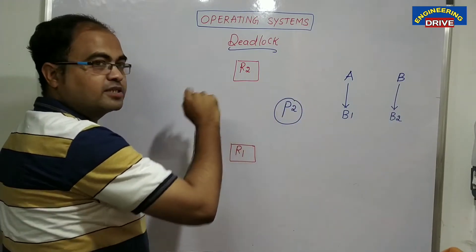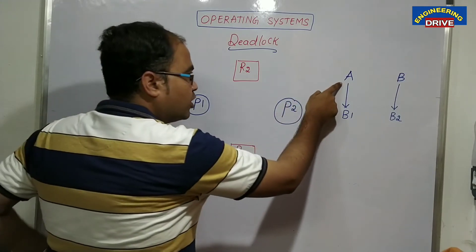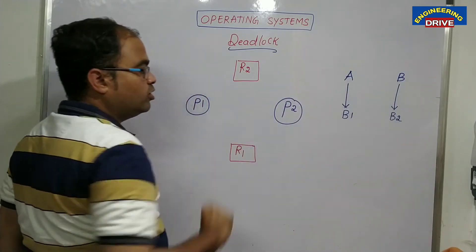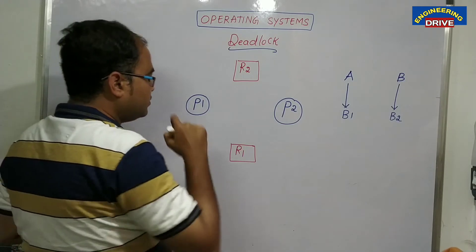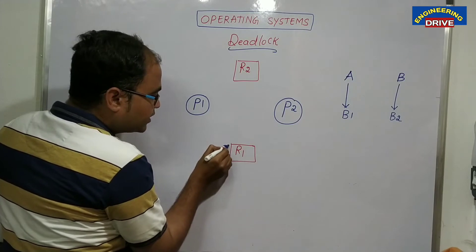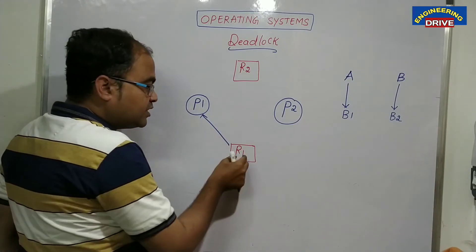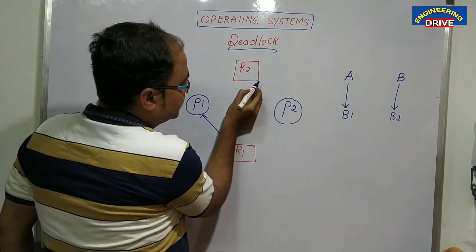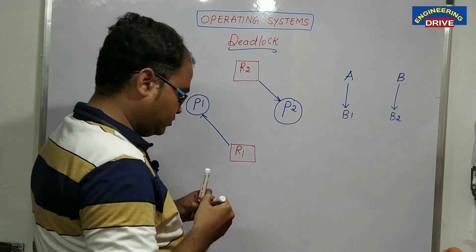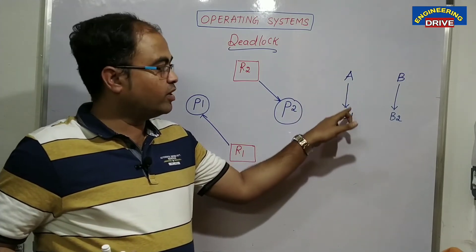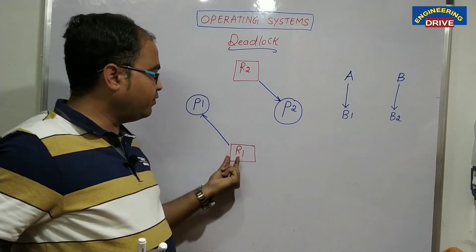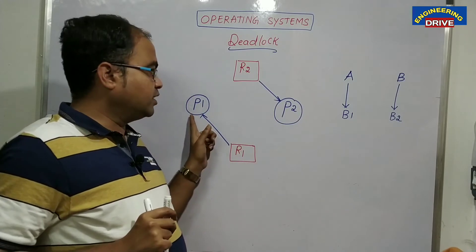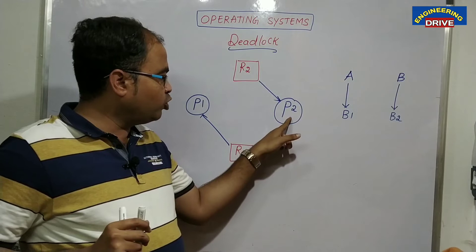In our example, A is already having book B1 and B is already having book B2. So book B1 is assigned to A, and book B2 is assigned to B. Similarly here, resource R1 is already assigned to process P1 — R1 is the property of P1. Resource R2 is the property of P2. P1 is having resource R1, and P2 is having resource R2. Now, P1 process wants resource R2, and P2 process wants resource R1.